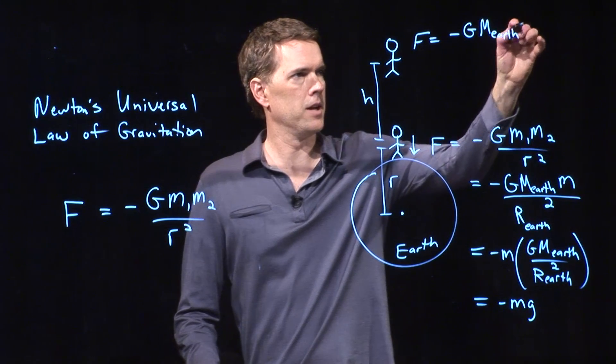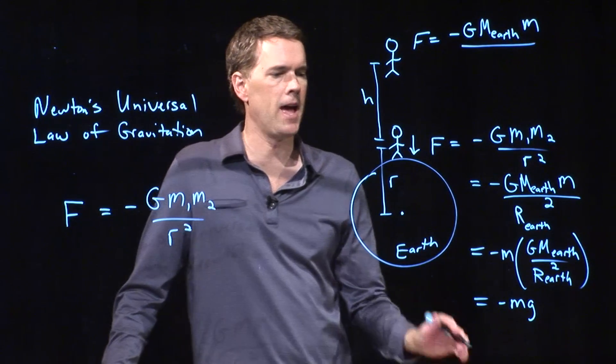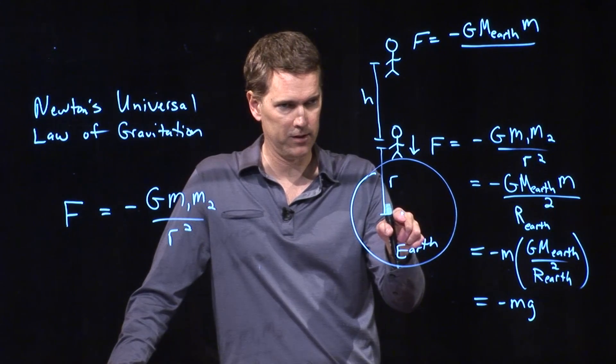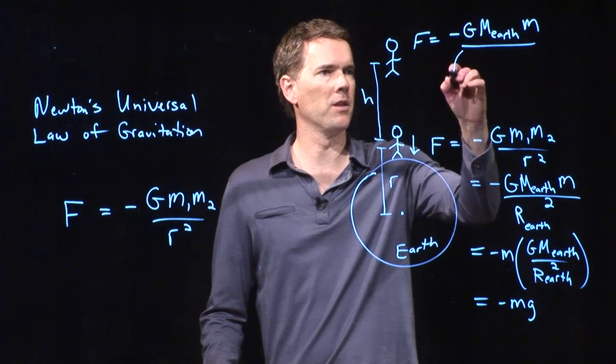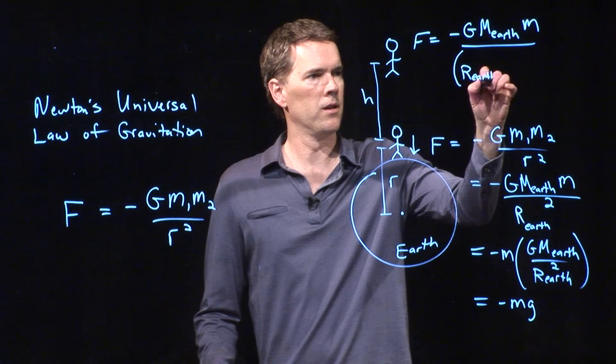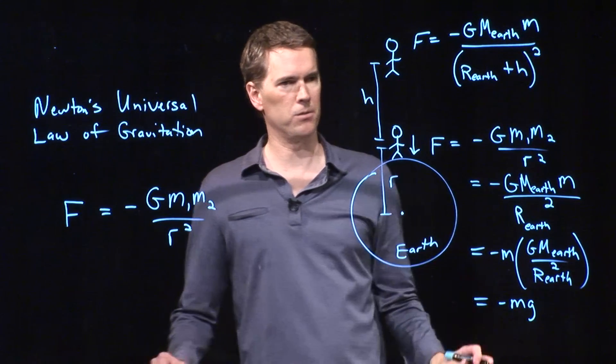divided by how far I am from the surface or from the center of the Earth. And now that's no longer just the radius of the Earth. It is in fact the radius of the Earth plus h quantity squared.